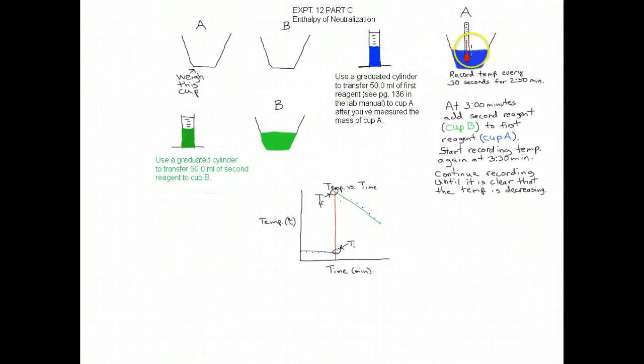Then with your partner, you're going to record the temperature in cup A, the first reagent, every 30 seconds for two minutes and 30 seconds. Then right at three minutes, you won't be recording the temperature, but you're going to be transferring the solution in cup B, the second reagent, into cup A and mix them together. Start recording the temperature again at three minutes and 30 seconds. Keep recording that until it's clear that the temperature is going to go up and then come down again until you have a clear trend so you can draw a straight line.